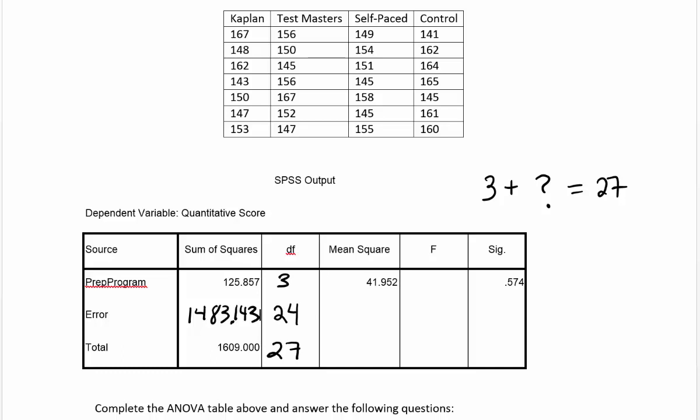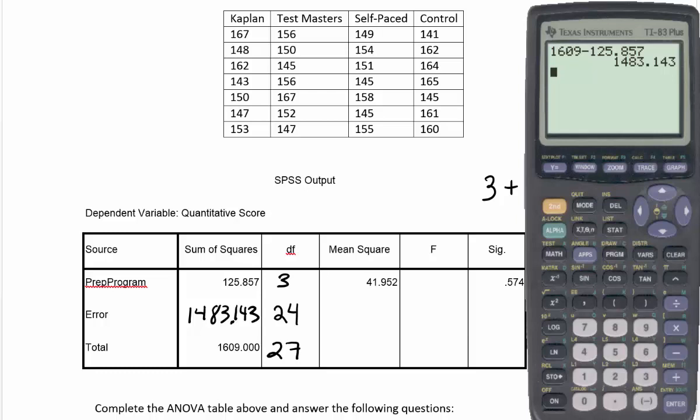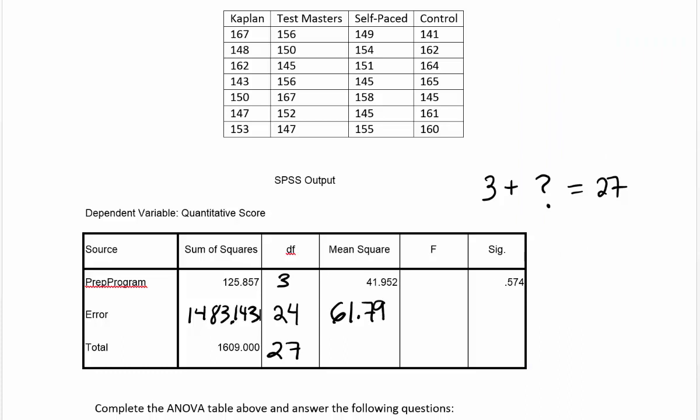Then we need to come up with the mean square for the table. For MST, we divide the degrees of freedom into the sum of squares. It's the same thing for the mean square for error. We divide its degrees of freedom into the sum of squares to get that value. Let's check our number for the mean square in the treatment row. If we take 125.857 and divide it by 3, we do indeed get 41.952. For error, 1483.143 divided by 24 gives us 61.798.